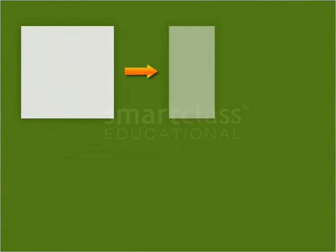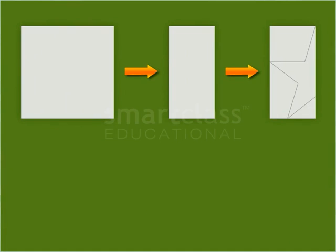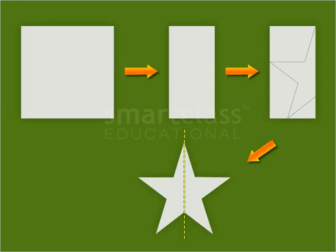So, a symmetric figure can be created by folding a piece of paper into halves, cutting a pattern out of the folded piece, then unfolding the paper cut out.